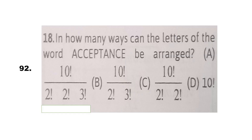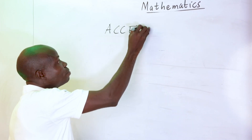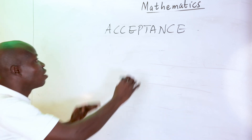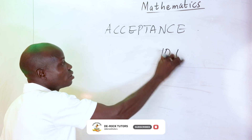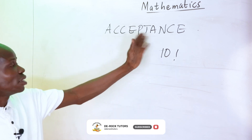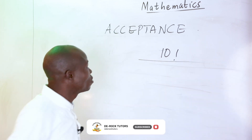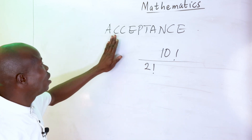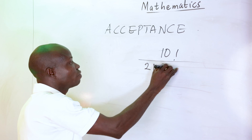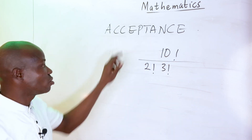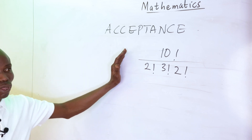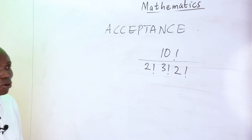Question 92: in how many ways can the letters of the word ACCEPTANCE be arranged? The word has 10 letters. However, A appears twice, C appears three times, and E appears twice. So the number of arrangements is 10! over (2! times 3! times 2!). That matches option A.